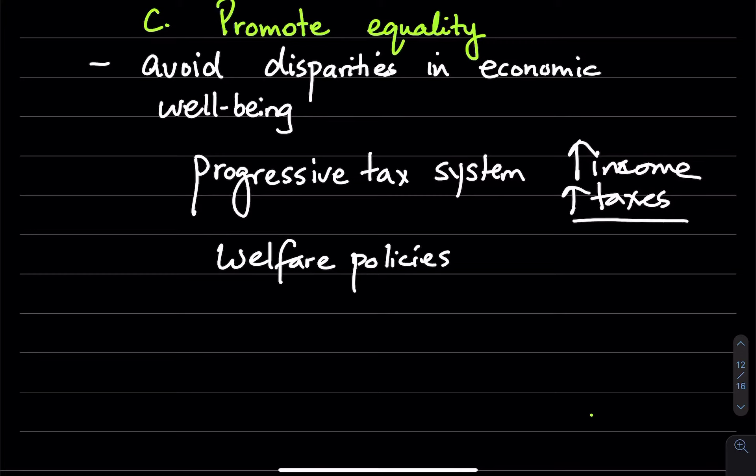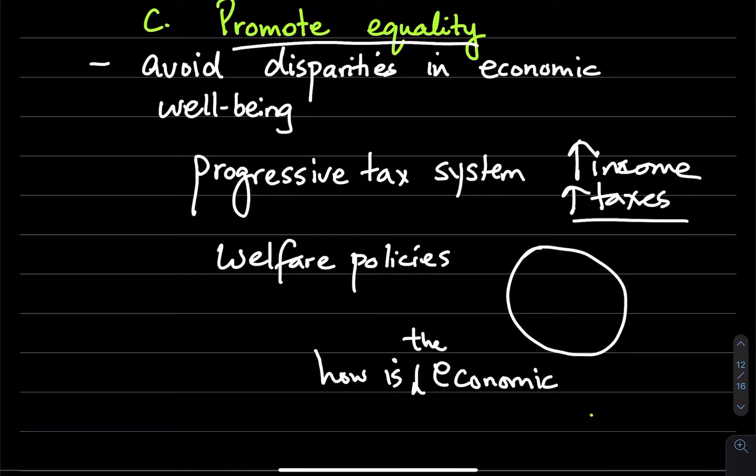Like unemployment insurance or unemployment benefits that really change how this economic pie is divided. So any policy that is focused on promoting equality is going to be focused on how the economic pie is divided and the idea here is to make it more equal if the policy is trying to do that.